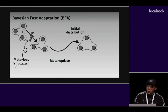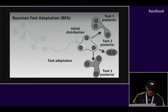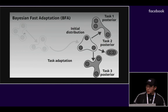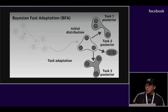This shows how Bayesian fast adaptation works. The initial distribution is represented by a set of particles, and then updated by computing the gradient of the meta-loss. The initial distribution is adapted to unseen new task posteriors. However, like other methods, it can still overfit if we do not deal with the uncertainty during meta-update.